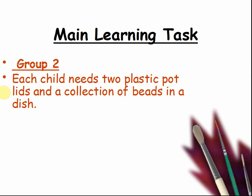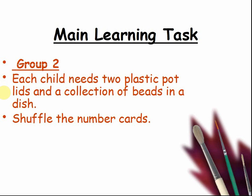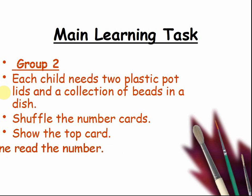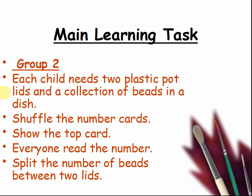Group 2: each child needs two plastic pot lids and a collection of beads in a dish. Shuffle the number cards, show the top card, and everyone reads the number. Split that number of beads between the two lids. For example, if you see the number 5, you might have 2 beads in one lid and 3 beads in the other — 2 plus 3 make 5. Pause the video and play the game.